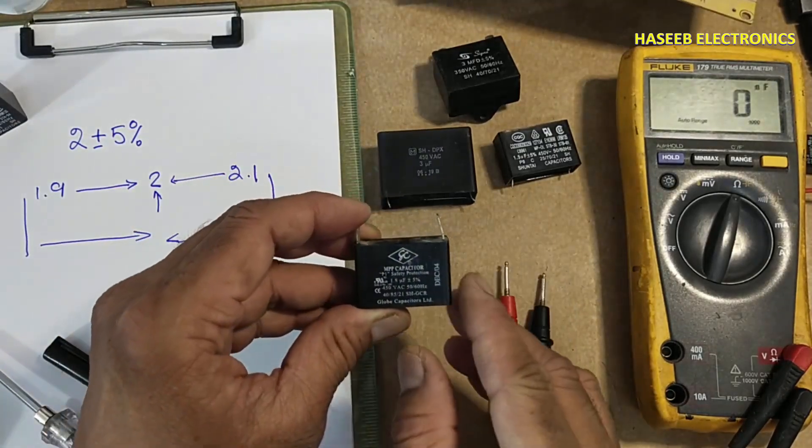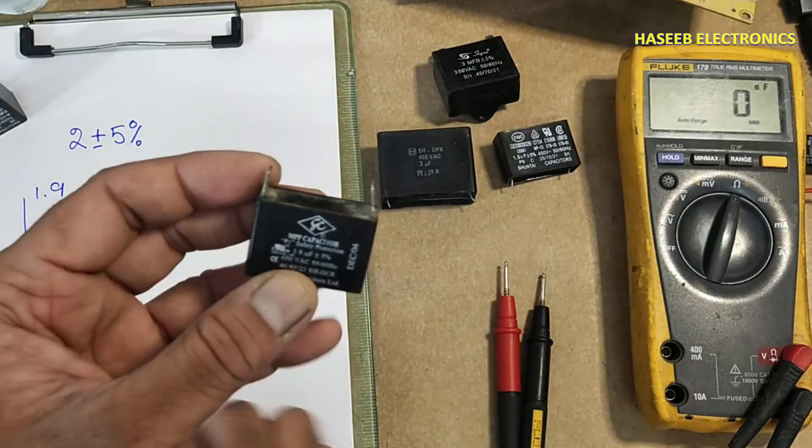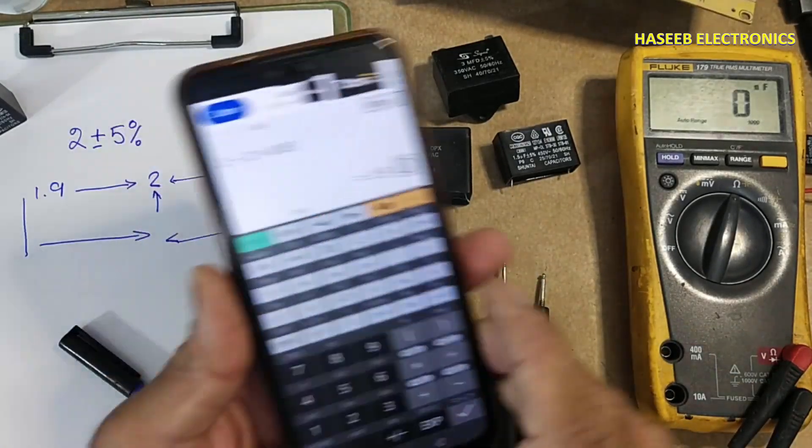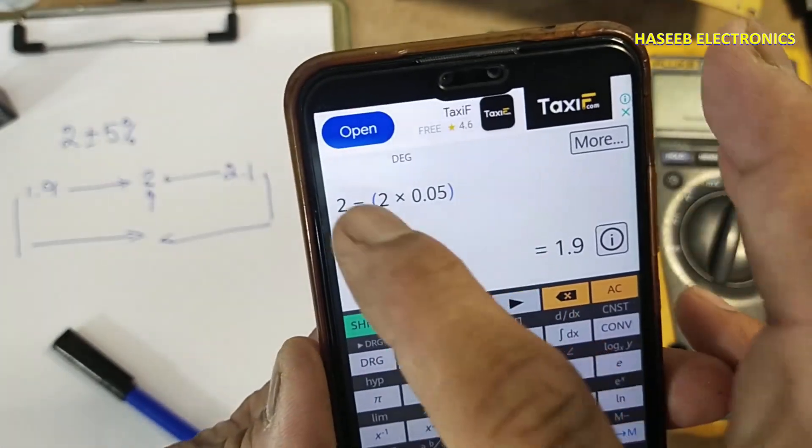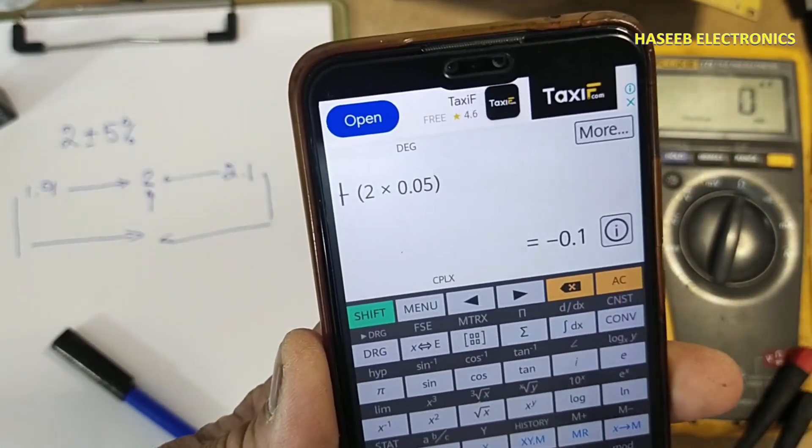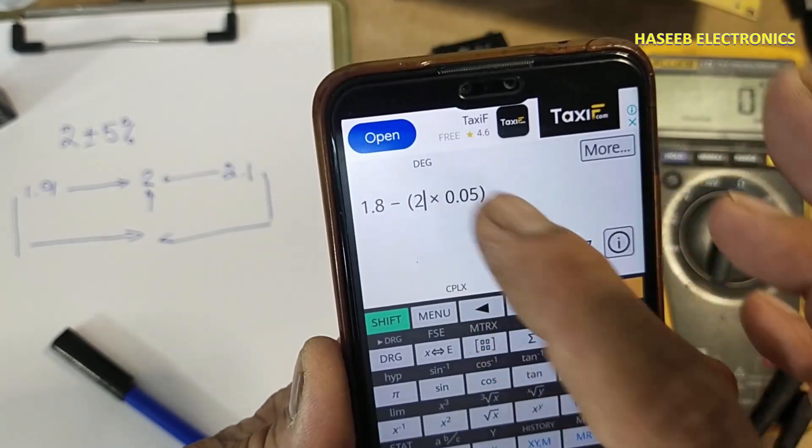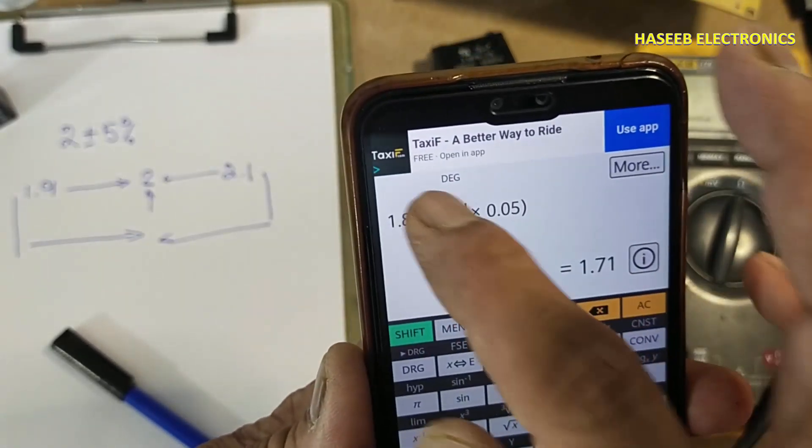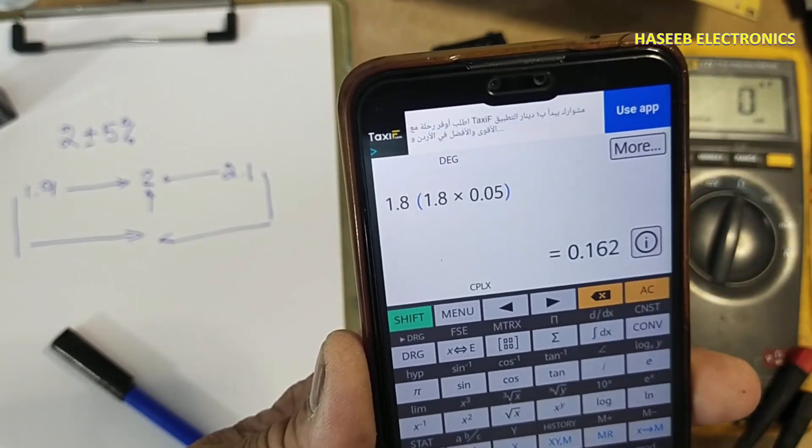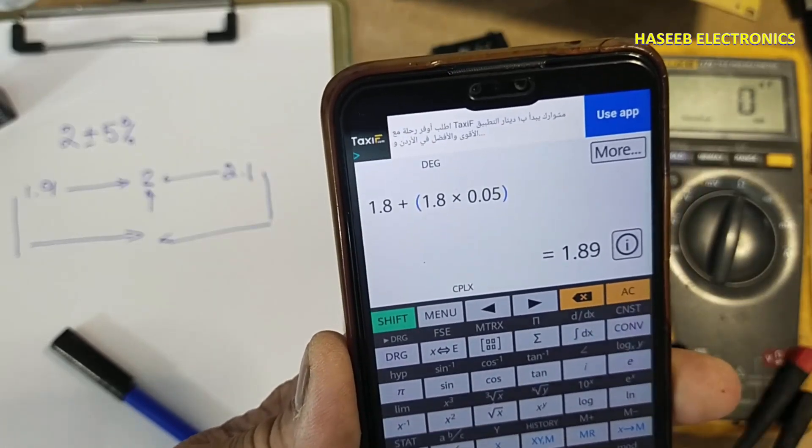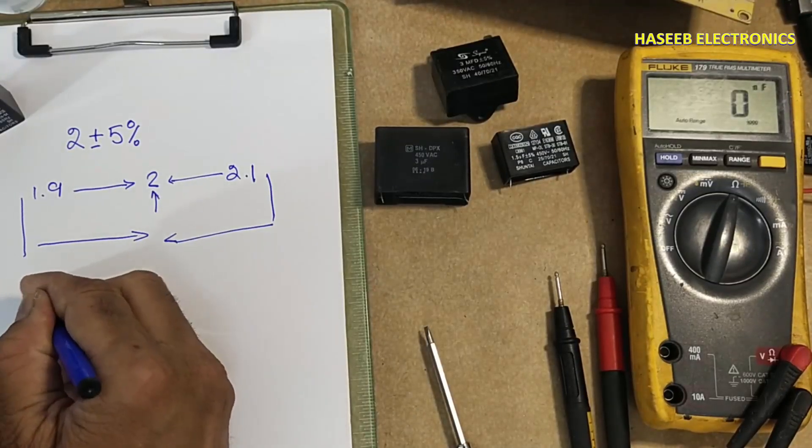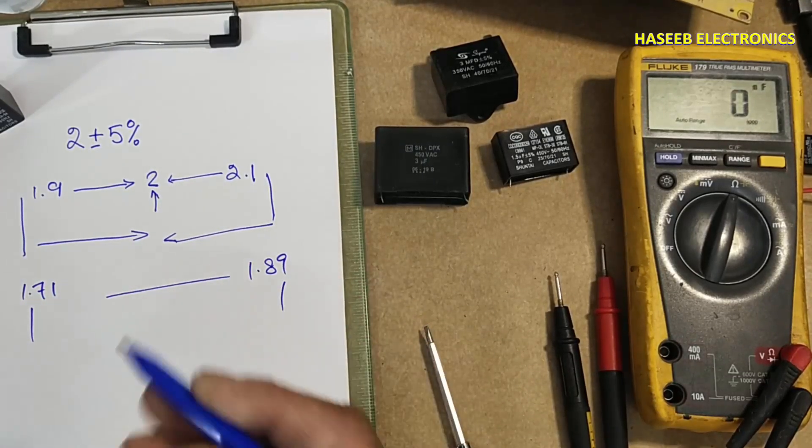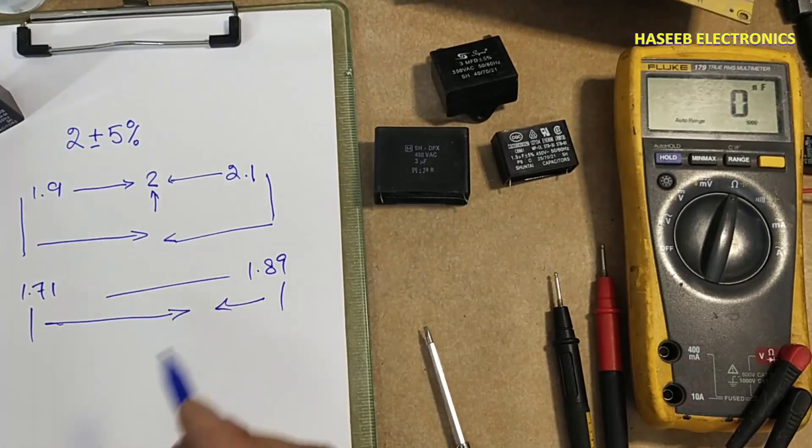If we check this one, it is 1.8 microfarad plus minus 5 percent. Same way, 1.8, lower limit 1.71 and upper limit 1.89. 1.71 to 1.89, if the value is in between these two cursors, the capacitor will be good.